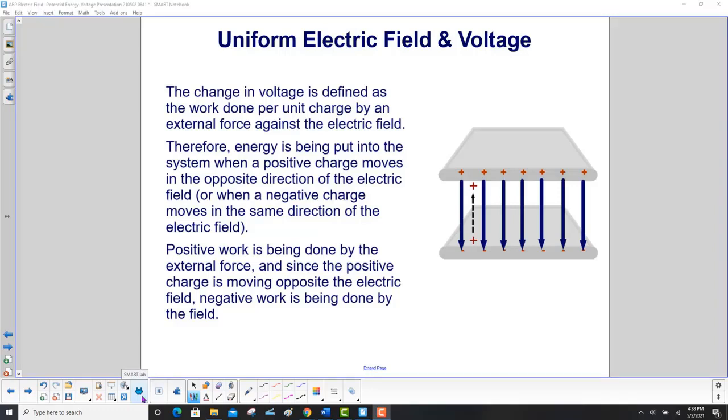The change in voltage is defined as the work done per unit charge by an external force against the electric field. We did that a few topics ago. Therefore, energy is being put into the system when a positive charge moves in the opposite direction of the electric field. So here we have a positive charge and it's moving this way against the electric field, which means somebody is applying an external force to it. It's also the same when a negative charge moves in the same direction of the electric field. Positive work is being done by the external force, and since the positive charge is moving opposite the electric field, negative work is being done by the field.